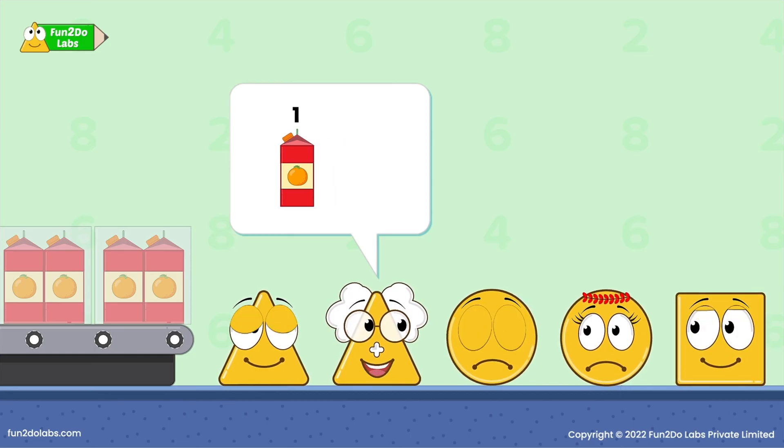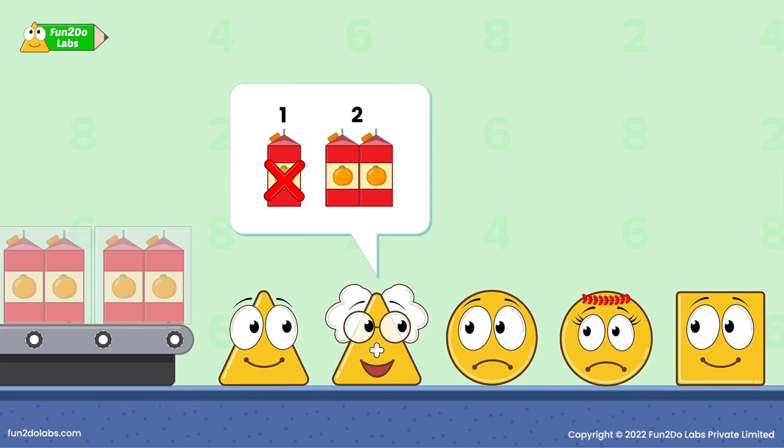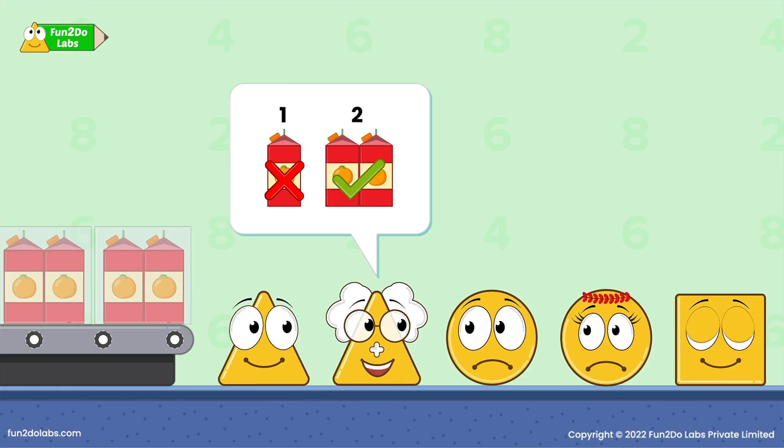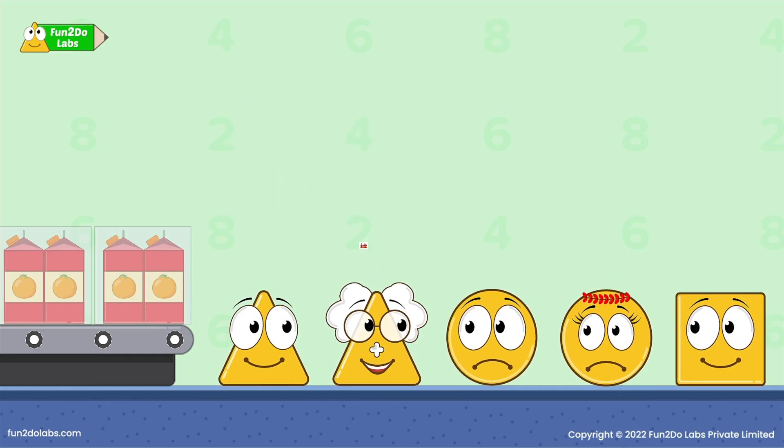To make a pair, you need a set of two packets. When Siro put one packet, it was not a pair. Whereas, when Squaro put two packets, a pair was formed.